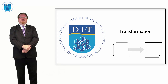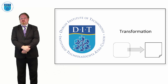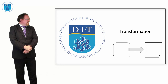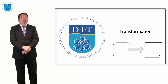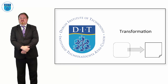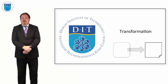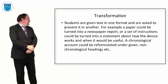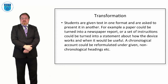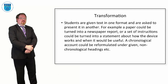Hello everybody, welcome to this episode of active learning. In this episode we're going to look at a technique called transformation, and again it's typically a group-based technique in which students are simply asked to transform text from one format to another. So it could be to turn an article into a newspaper report, or an academic research paper into a diagram, or stuff like that.